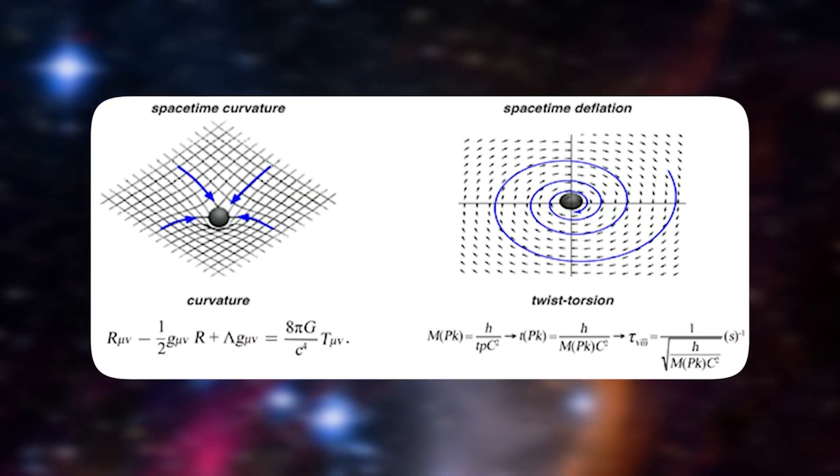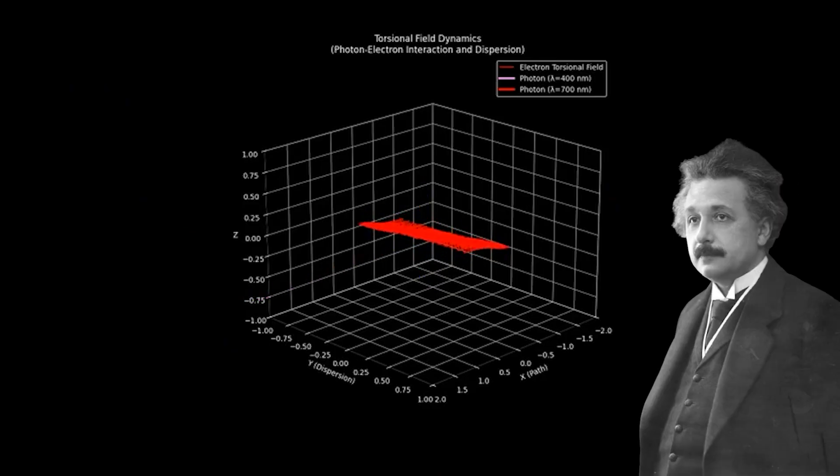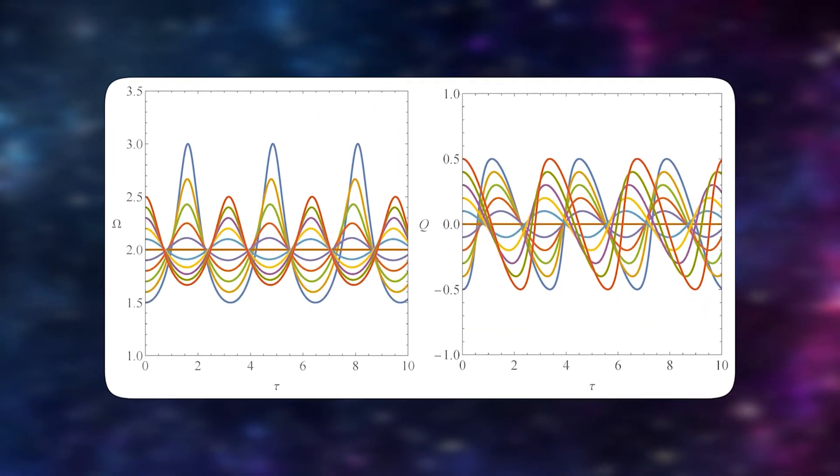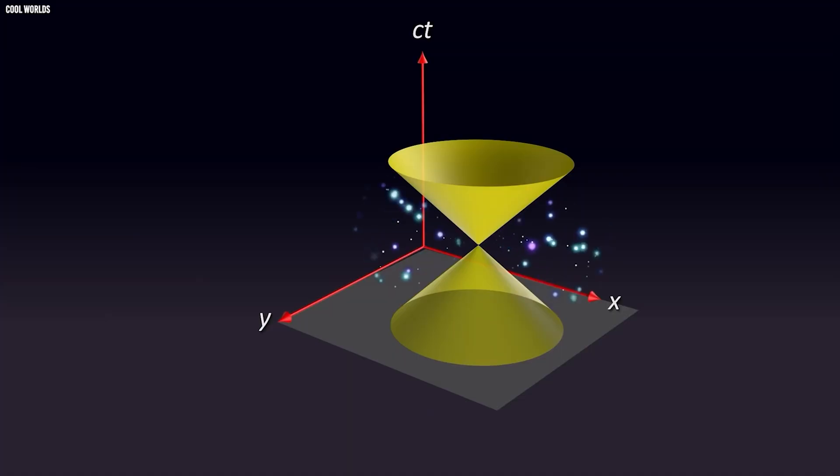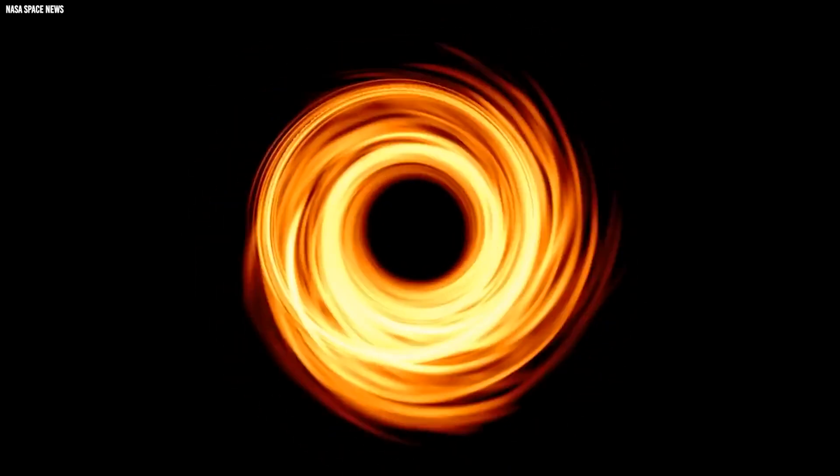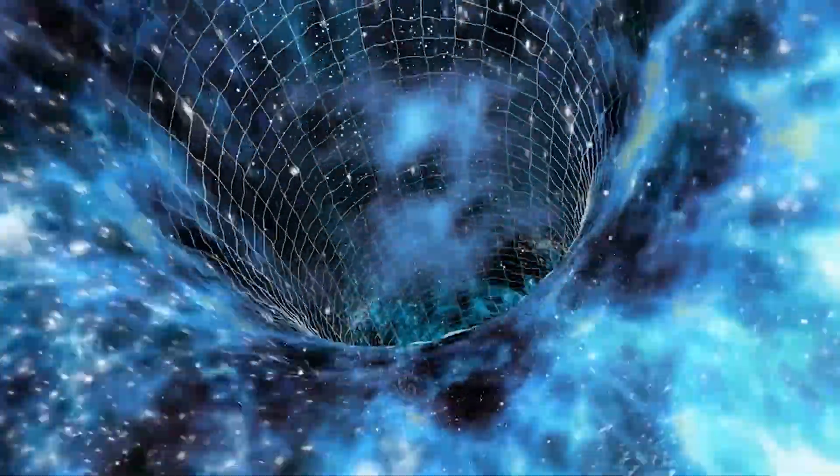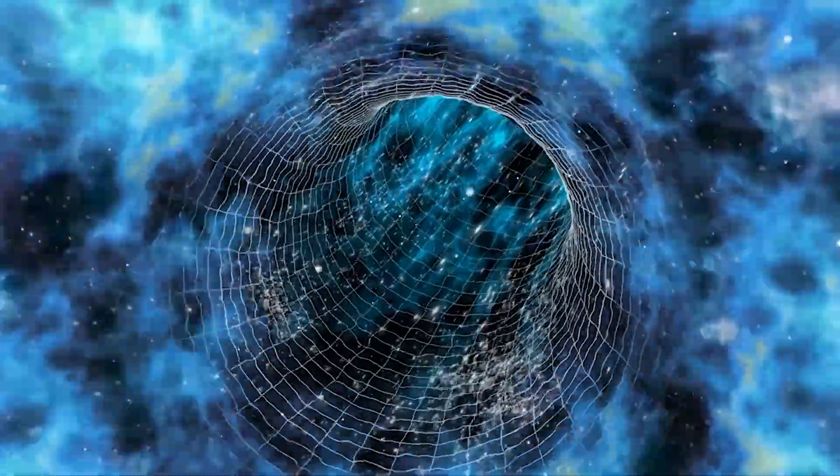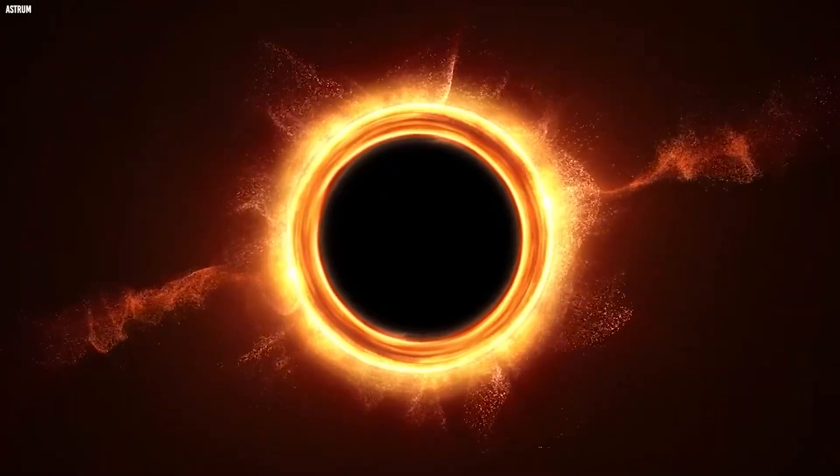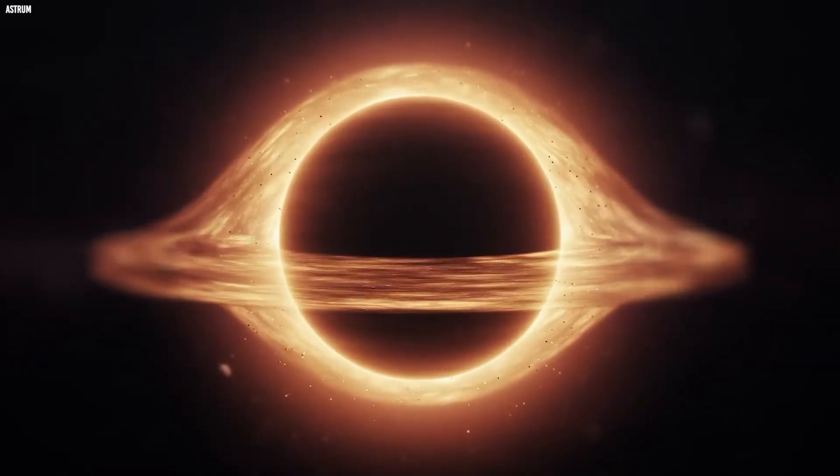Another piece of the puzzle involves something called torsion. Extended versions of general relativity, such as Einstein-Cartan theory, describe torsion as a twisting effect tied to the intrinsic spin of particles, capable of altering space-time's geometry. Some models propose that this twist creates a repulsive force under extreme densities, preventing matter from collapsing into an infinitely tiny point. If this mechanism is real, then black holes wouldn't shrink into true singularities at all. Instead, the core might reach a critical density, rebound, and expand in a dramatic, big bounce.